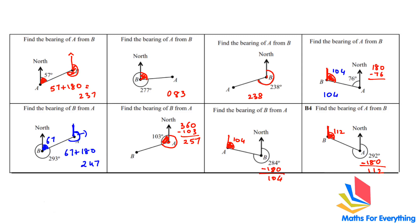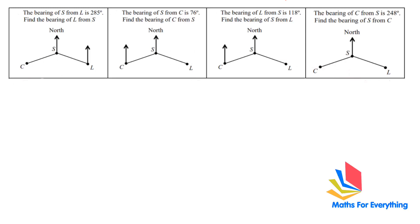Now we move to another set of questions that look different but are the same concept, just without angles marked in the diagram. The bearing of S from L is 285 — so moving clockwise from north at L, this is 285. Now find the bearing of L from S: the reflex angle was given, so 285 minus 180 gives 105. That is the bearing of L from S.